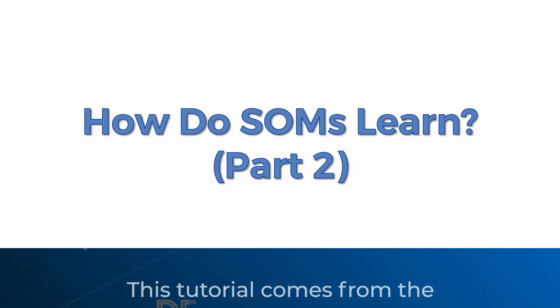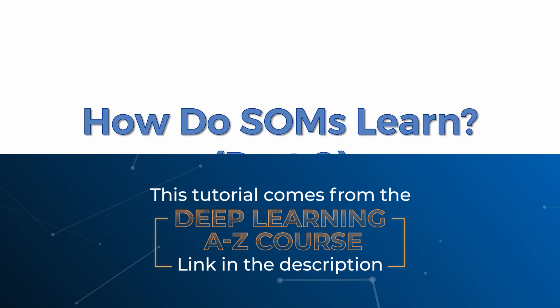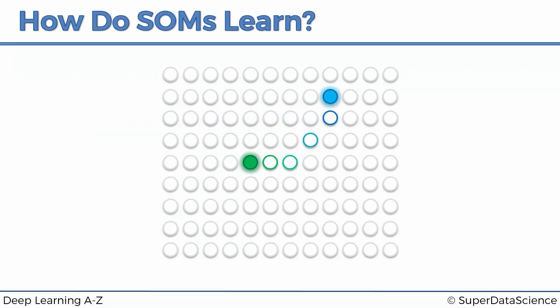Hello and welcome back to the course on deep learning. In today's tutorial we will continue exploring how self-organizing maps learn. Previously we stopped at this image where we found out how the best matching units or BMUs are updated and how everything around them is also updated when they find rows which they match up to. Today we're going to look at a more sophisticated example where we have several best matching units — five in this case.